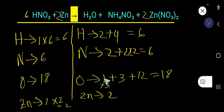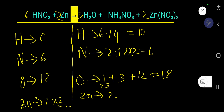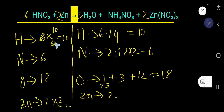Multiplying H₂O by 3 means placing 3 in front of H₂O: hydrogen is now 6, oxygen is 3. Totals: 6 + 4 = 10 hydrogen on the right, 18 oxygen on both sides — oxygen is balanced. But hydrogen is 10 on the right and 6 on the left, so we need to balance hydrogen. We need 10 hydrogen, so we multiply HNO₃ by 10 over 6. Place 10/6 in front of HNO₃: 10/6 times 6 hydrogen = 10. So we now have 10 hydrogen and 10 nitrogen on the left.